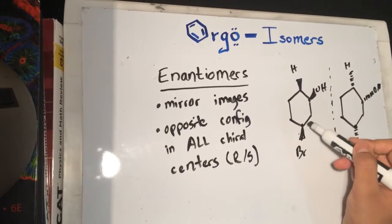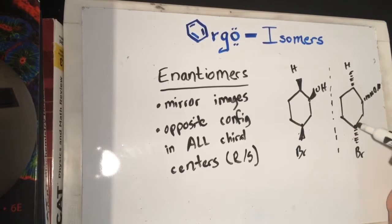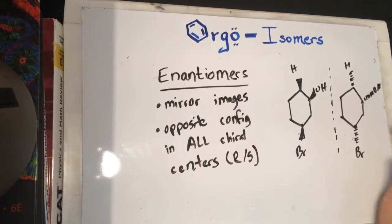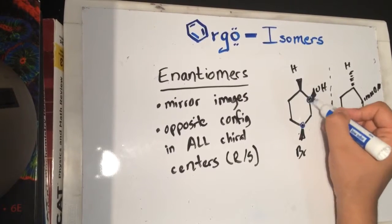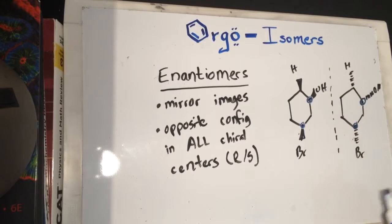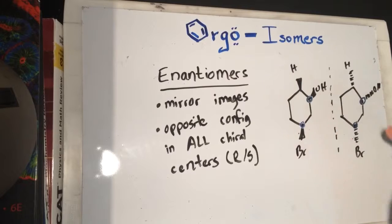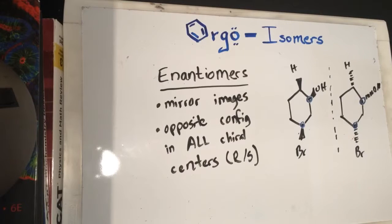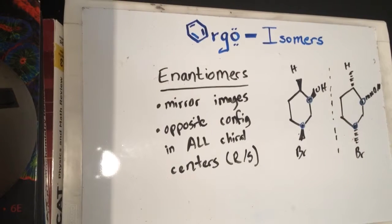These are enantiomers because if you do the R/S configurations for these chiral centers, you'll find that if one center is R, the corresponding one will be S, and vice versa — basically opposites. So enantiomers are mirror images and they have opposite configurations in all their chiral centers.